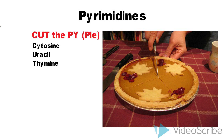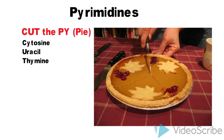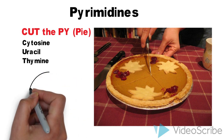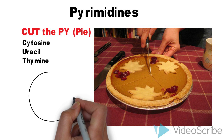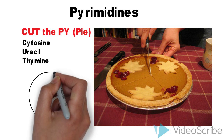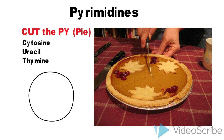You also know that pyrimidines have one ring in their structure. To remember this, the trick is that 'py' means one circle or a ring.